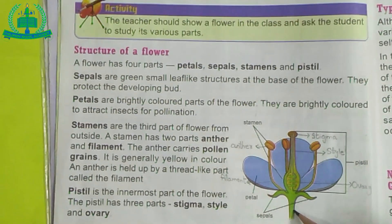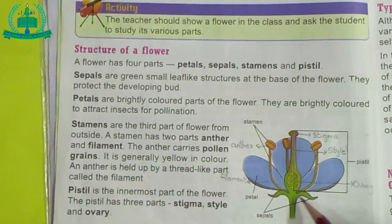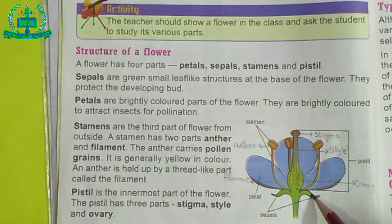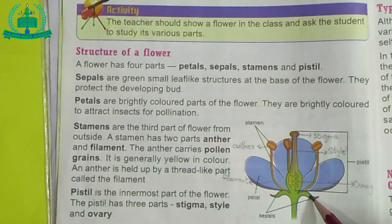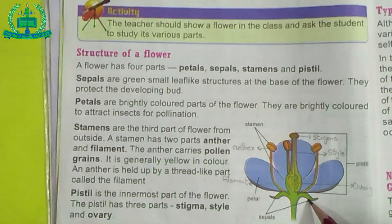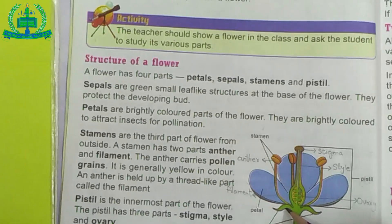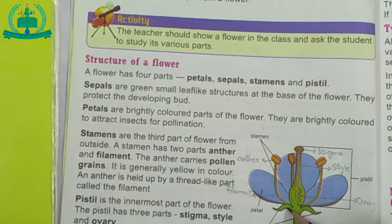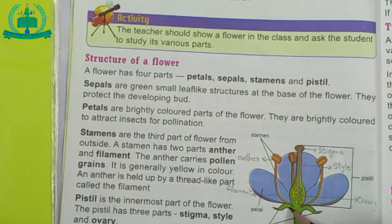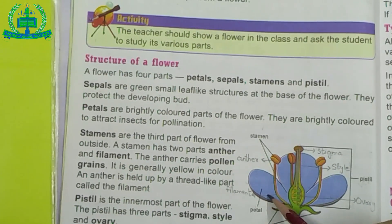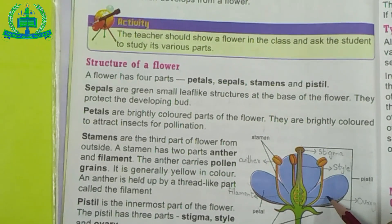Sepals — what are sepals? Sepals are small green leaves at the base of the flower. The sepals may remain free from one another, and they protect the developing buds. The second part is Petals. What are petals? Petals are the colorful part of the flower. They attract insects for pollination.